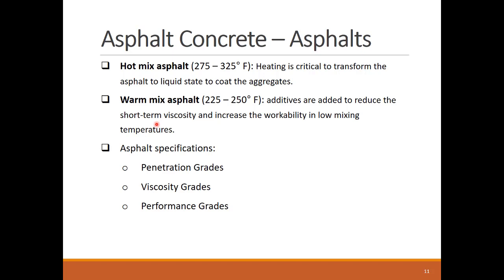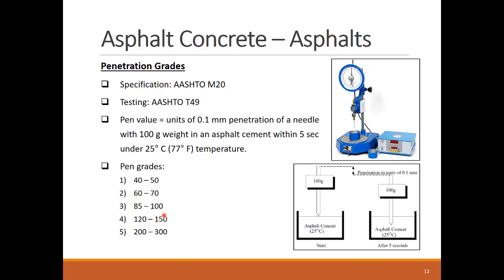Standard asphalt mixes are specified using three main approaches: penetration grades, viscosity, and performance grades. An asphalt mix is given a penetration grade based on an ASTM standard test that measures its penetration value as the distance in 0.1 mm that a 100-gram needle penetrates into an asphalt cement within five seconds at a specific temperature. The mixes can follow five standard penetration grades. The higher the penetration value, the more viscous the mix will be.